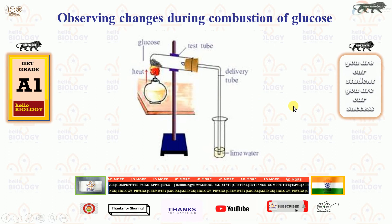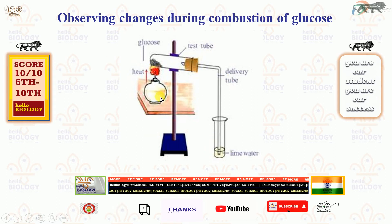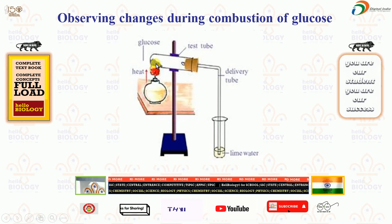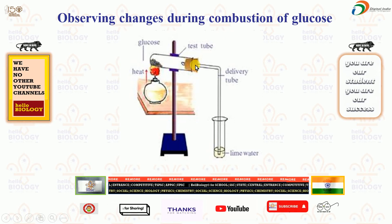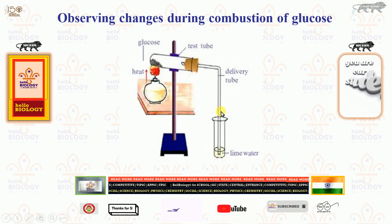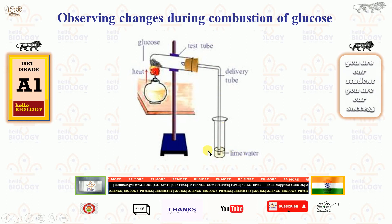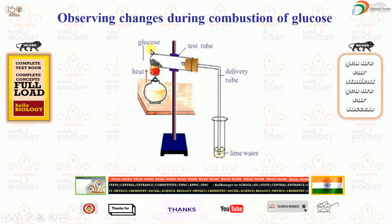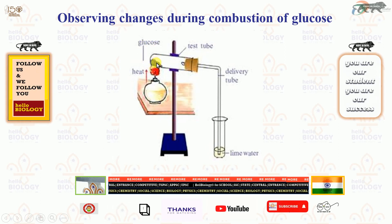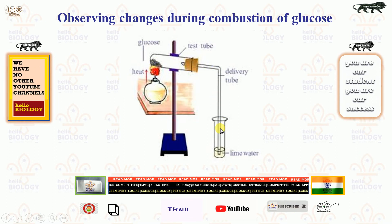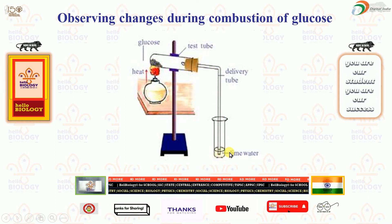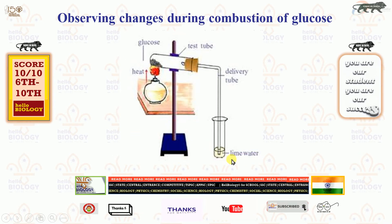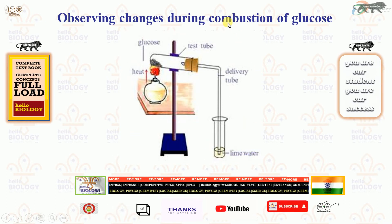In this experiment, the procedure is important. The apparatus includes: stand, table, spirit lamp, glucose, test tube, clamps, one-hole rubber cork, delivery tube, and lime water. When sugar (glucose) is burnt, it produces carbon dioxide, which is released into the lime water, turning it milky white. This entire experiment is known as the combustion of glucose.